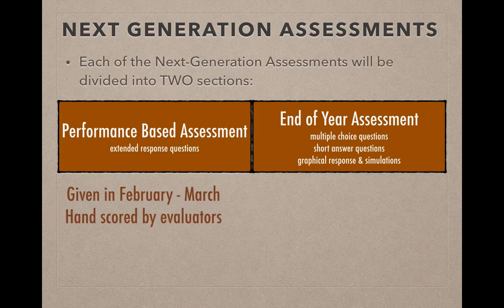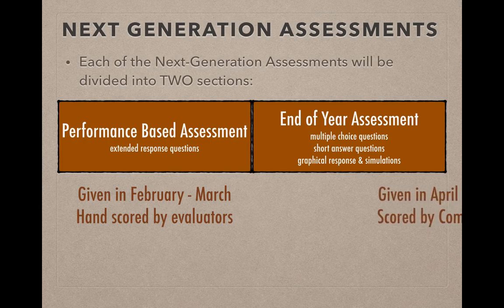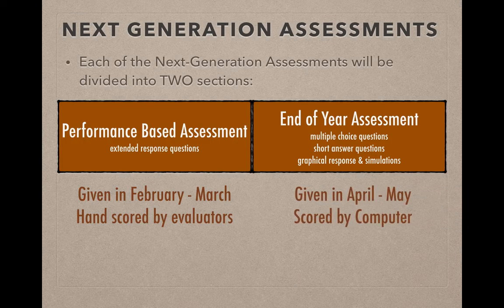The Performance-Based Assessment will be given in February through March, and these will mostly be hand-scored by evaluators, very similar to the way the OAAs have been in the past. The End of Year Assessments will be given in April to May, and these will mostly be scored by computers.